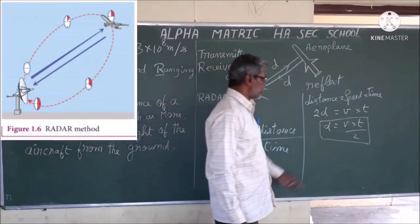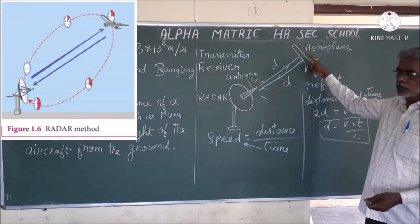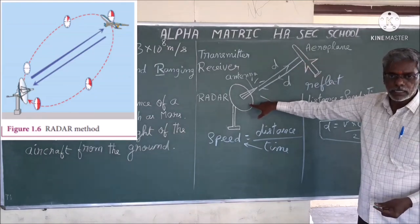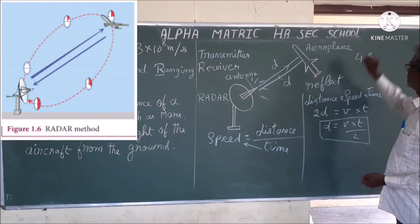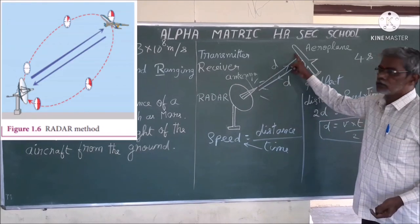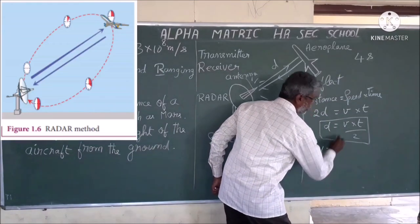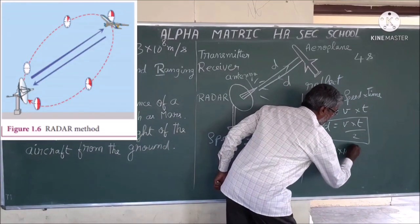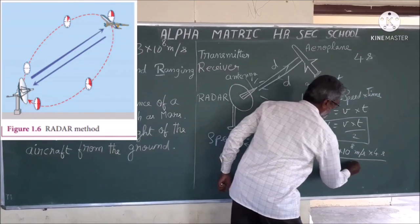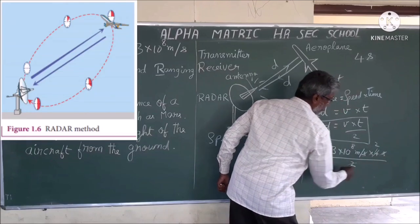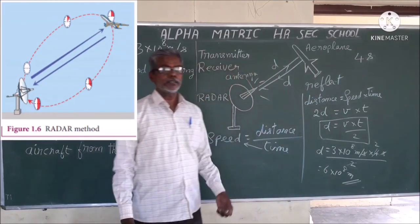For example, if the time taken for the signal from the antenna to the target and back is 4 seconds, then the one-way time is 2 seconds. So D = V × T / 2 = 3×10⁸ × 4 / 2. The 2s cancel, giving D = 6×10⁸ meters. This is the distance.